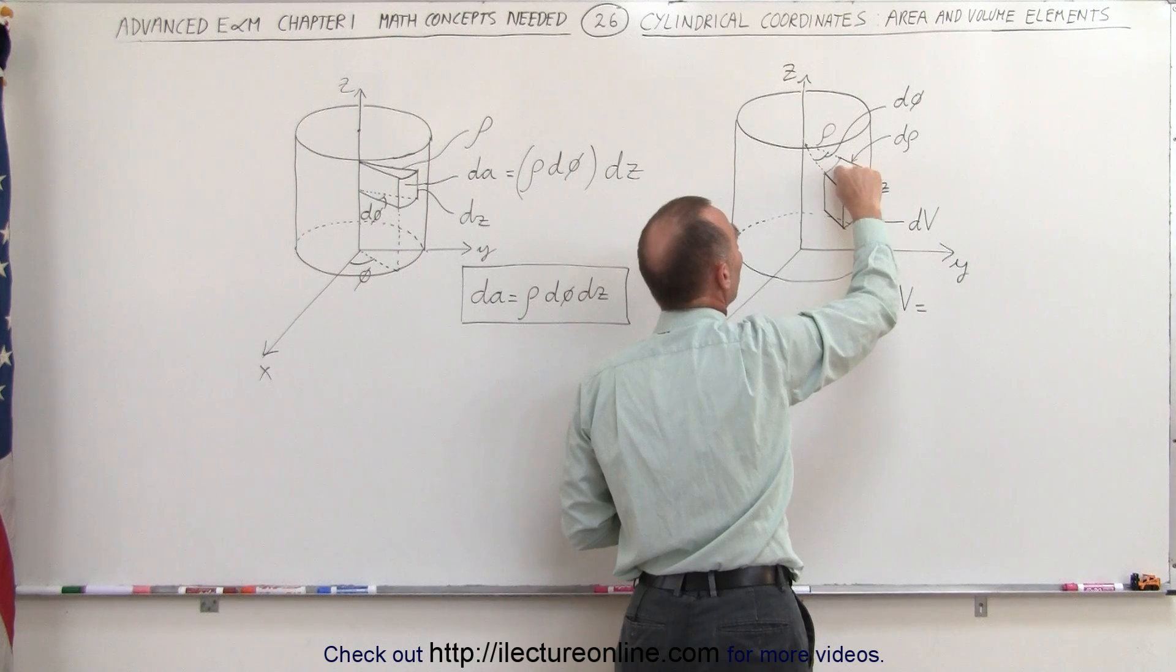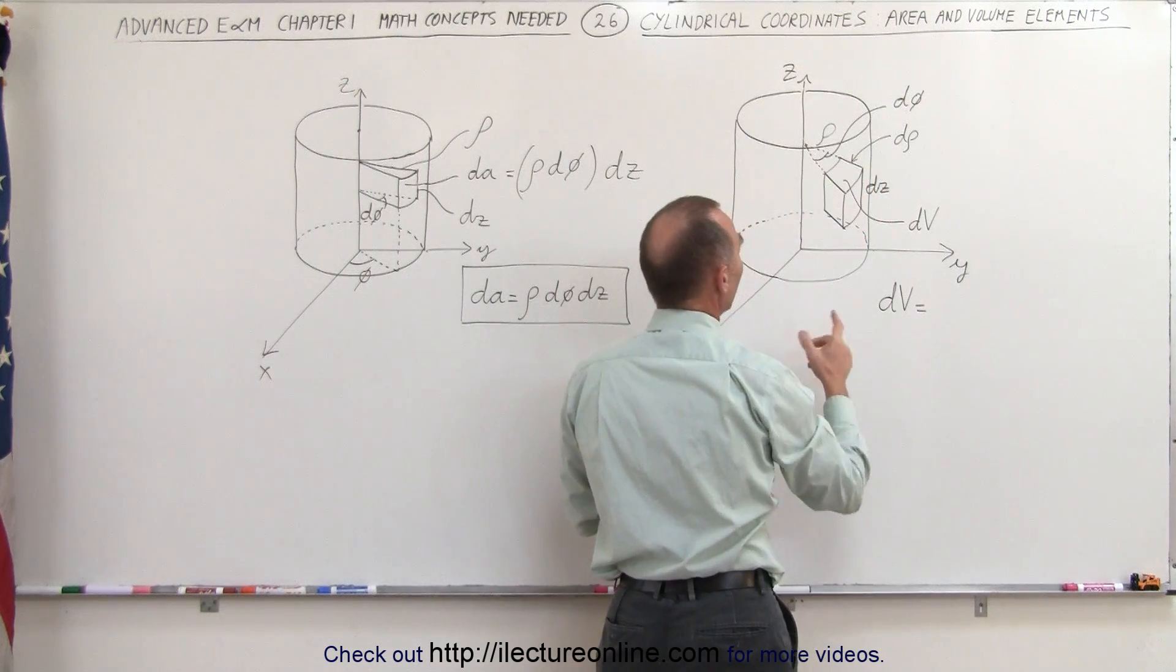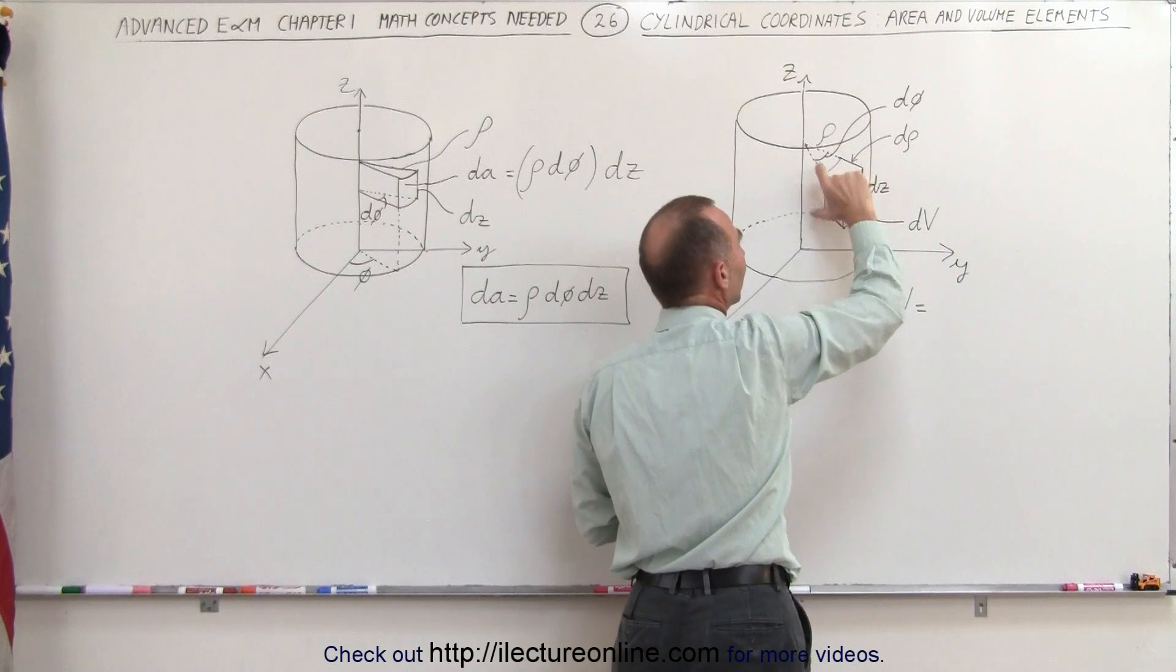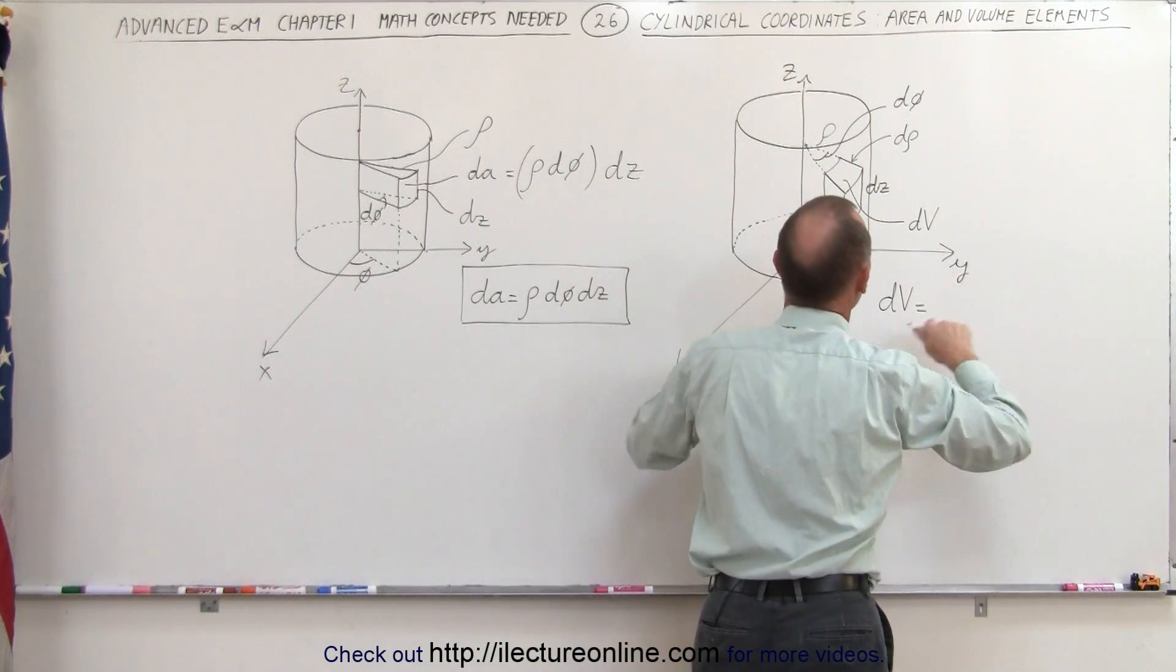Therefore, this distance here is rho times dPhi, so the volume is going to be the width times length times the height. The width here is rho dPhi.